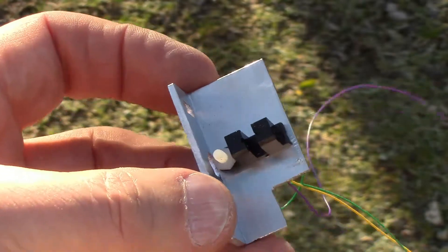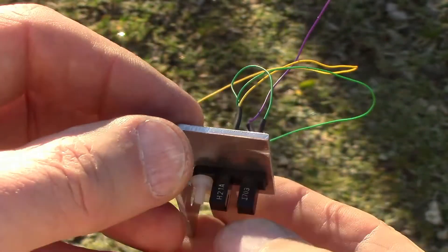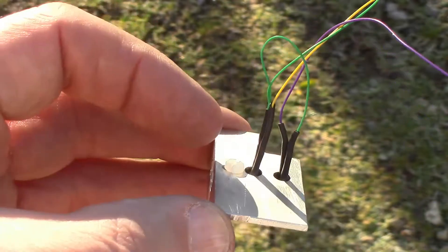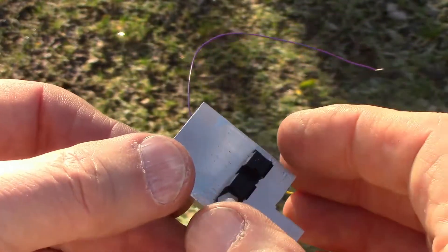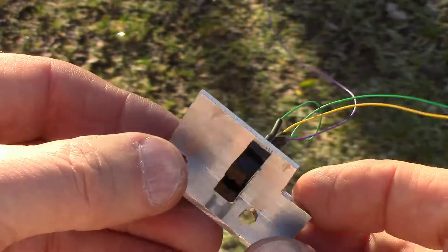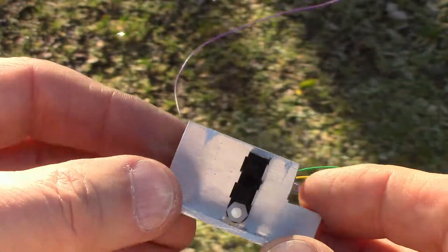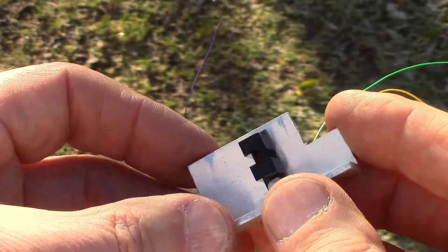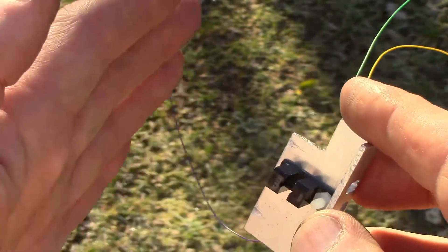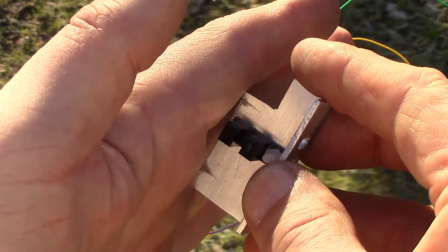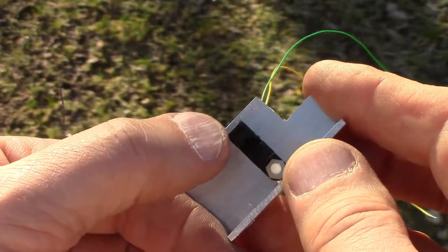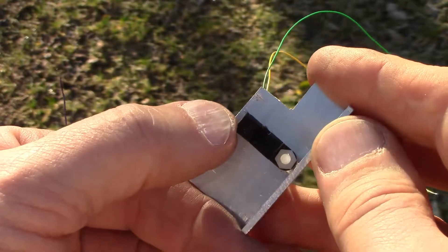This is what it looks like when I've installed the opto switch, and I can adjust it this way and that way as necessary. Because there's so little clearance in this box, I've got to have this bracket coming forward up to the edge of the box.